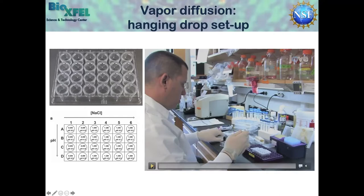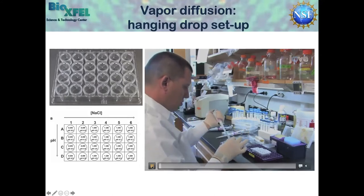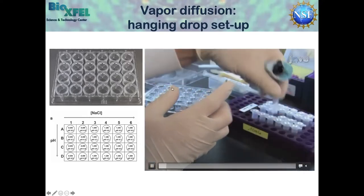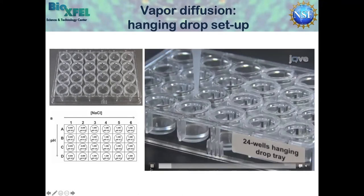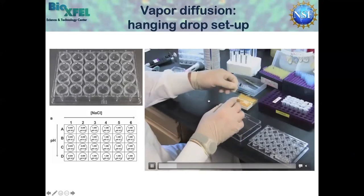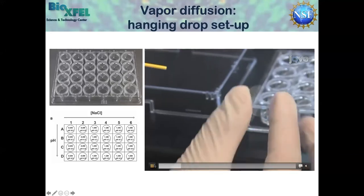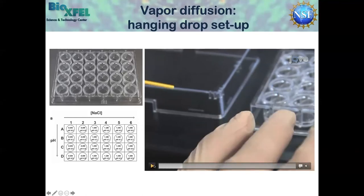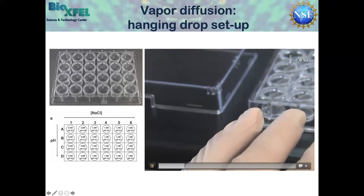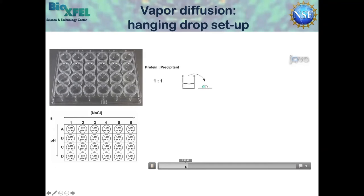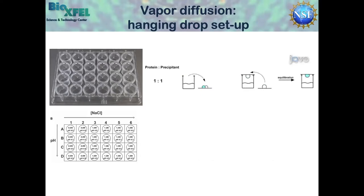I'll narrate this video since we can't do this in person. The scientist has already prepared all the individual solutions required for their tray and is now filling the reservoir solution, which sits at the bottom of the well. Now they're pre-greasing the wells with silicon grease — you want to do it in such a way that you leave an opening for air escape when you seal it. Here are the cover slips — these are probably the 18 millimeter ones. They're using an air can to dust off any particulates or contaminants that might interfere with your crystallization experiment, because it can be disheartening if you look at your tray, think you have a hit, and it turns out to be a fiber contaminating it.